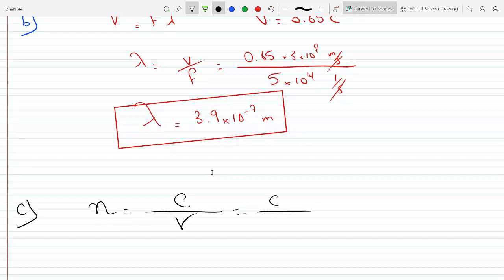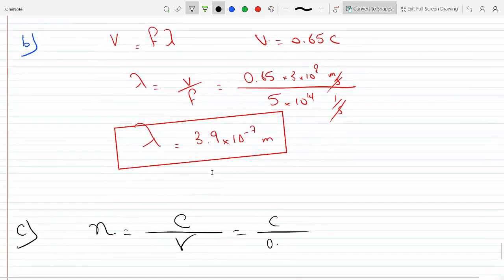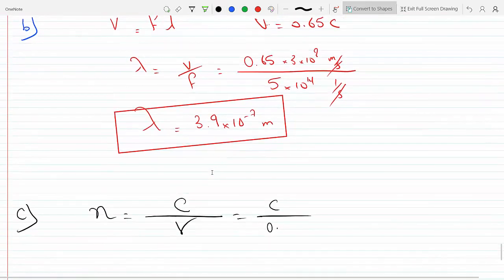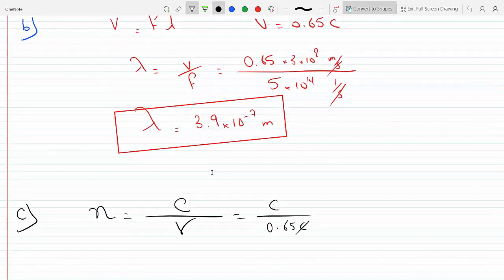c over 0.65c. You can cross out the c with the c, so it's just 1 over 0.65, which is 1.54, which is close to about 1.5, the index of refraction of glass.